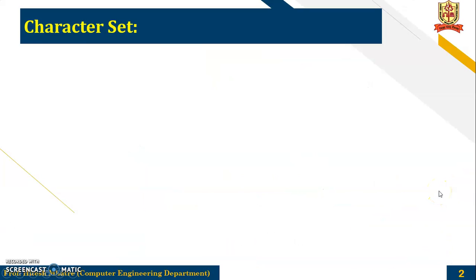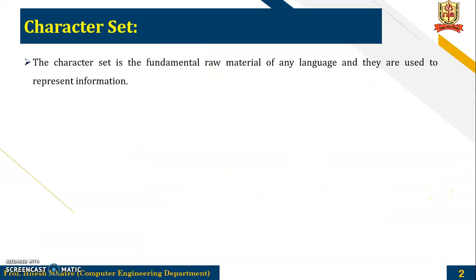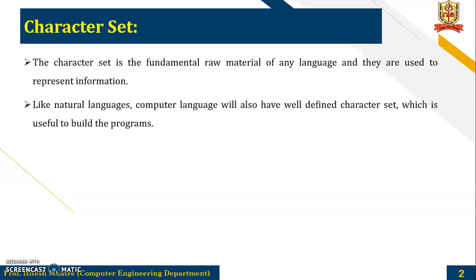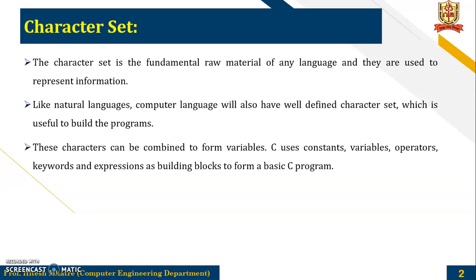So what is a Character Set? A Character Set is a fundamental raw material of any language and they are used to represent information. Like natural languages, computer language will also have a well-defined character set which is useful to build the programs. These characters can be combined to form variables. C uses constants, variables, operators, keywords and expressions as a building block to form a basic C program.